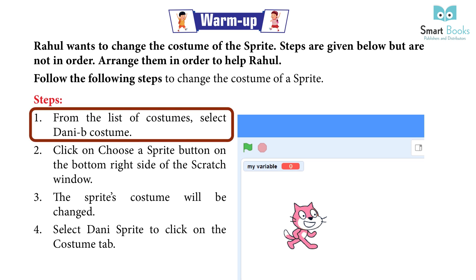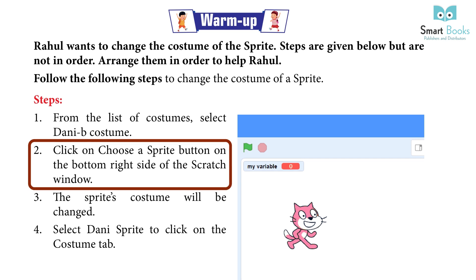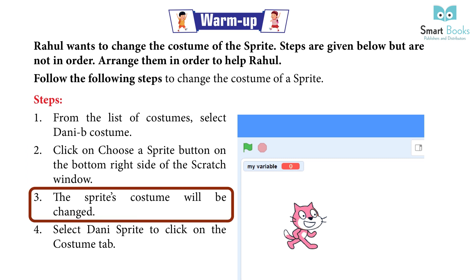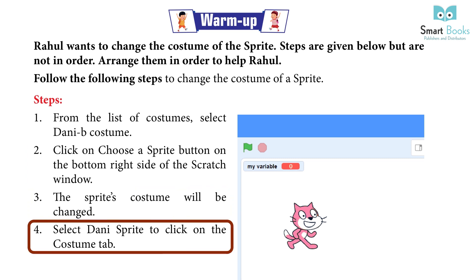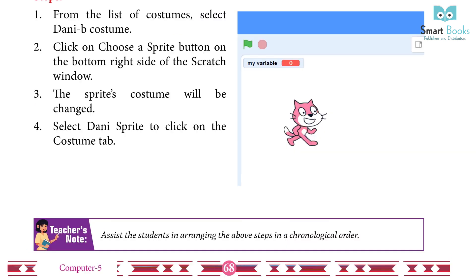Steps: 1. From the list of costumes, select Dhani B costume. 2. Click on the Choose a sprite button on the bottom right side of the Scratch window. 3. The sprite's costume will be changed. 4. Select Dhani sprite and click on the costume tab.